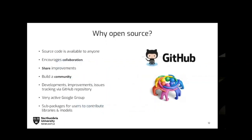The decision to make GPR Max open source wasn't entirely straightforward. We did have discussions about whether to commercialise the software. However, we felt the GPR community was relatively small and there perhaps wasn't a great deal of profit to be made. Philosophically, we thought it was the right thing to share the code so that everyone wasn't developing their own FDTD solver in isolation, and we wanted to build a community around that.